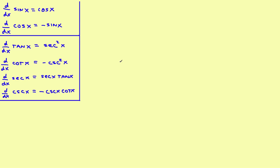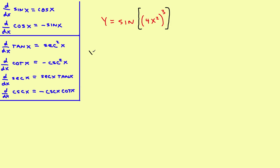Let's look at a couple more complicated examples of the chain rule with trig. Let's start with this. In the last part one program, I showed you how to do this using the chain rule of the argument. If you have one that looks like this, think of the entire argument as being in brackets. So let's find the derivative of that.